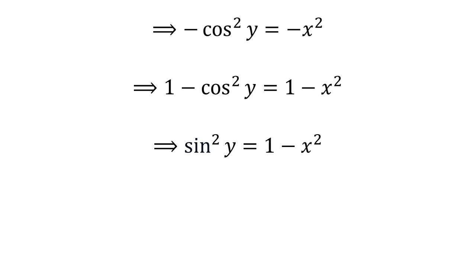As 1 minus square of cosine of y is equal to square of sine of y by application of the famous trigonometry identity sine squared y plus cosine squared y equals 1, we get sine squared y is equal to 1 minus square of x.